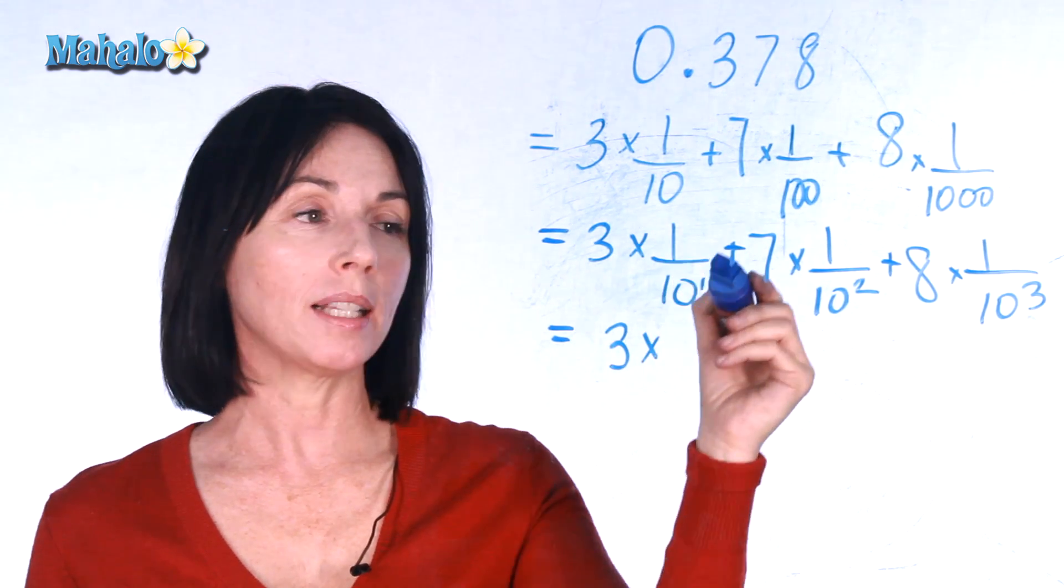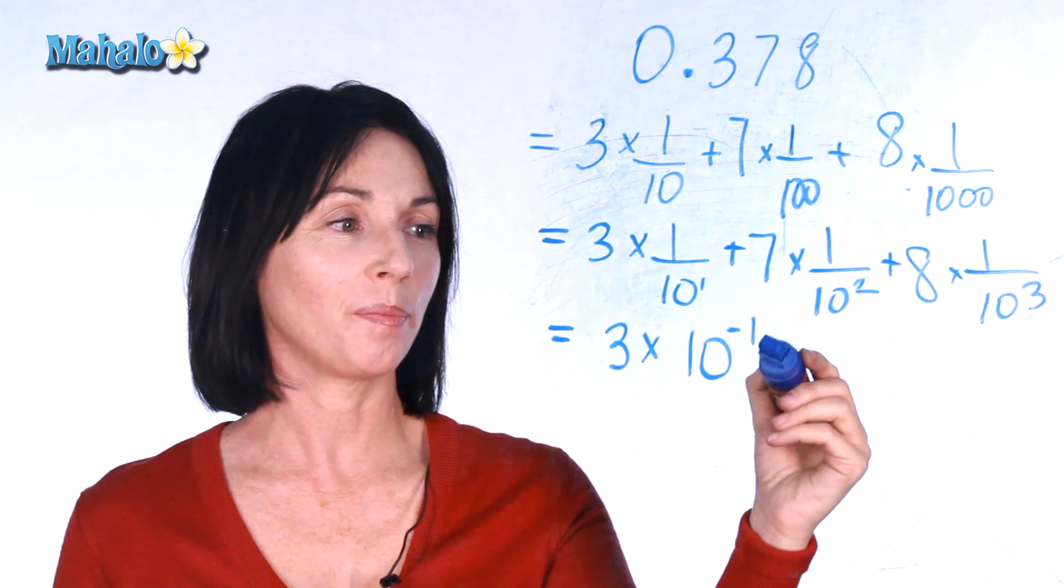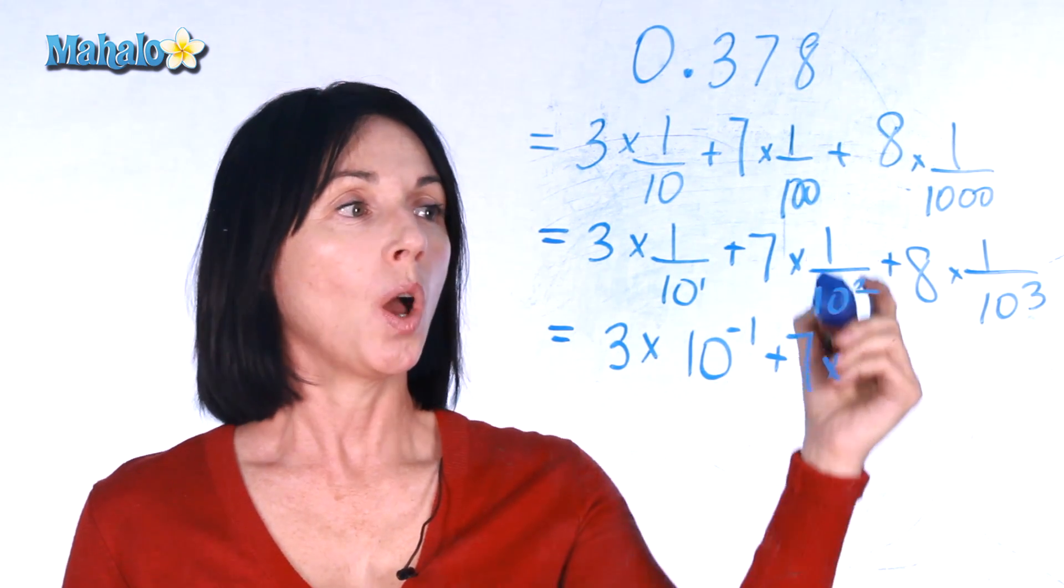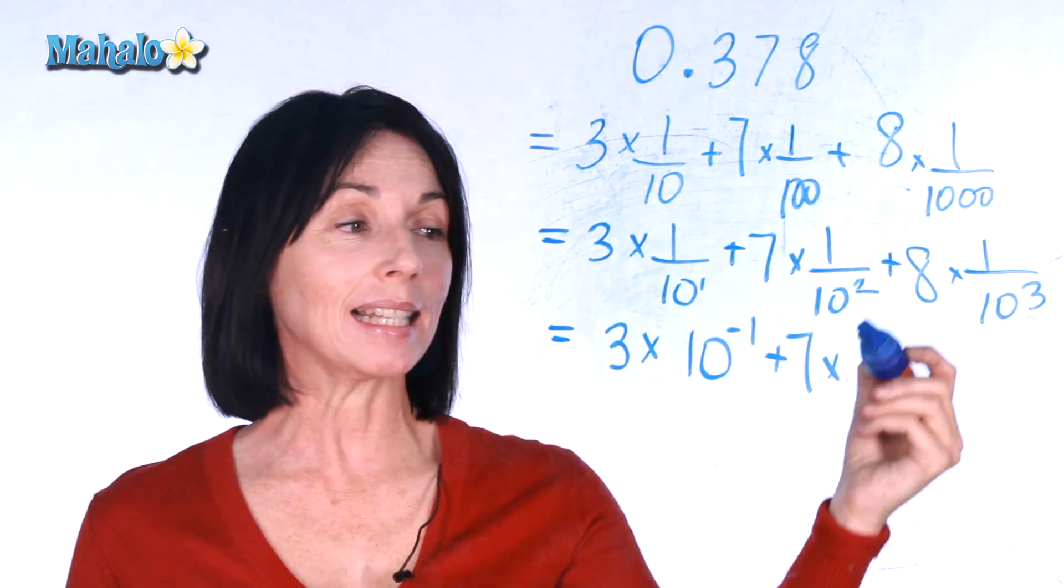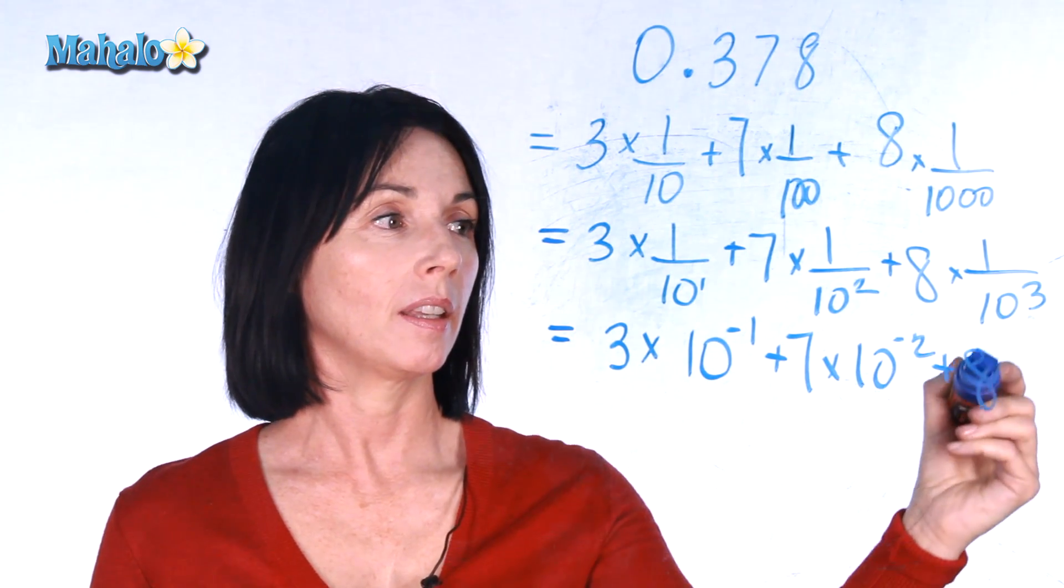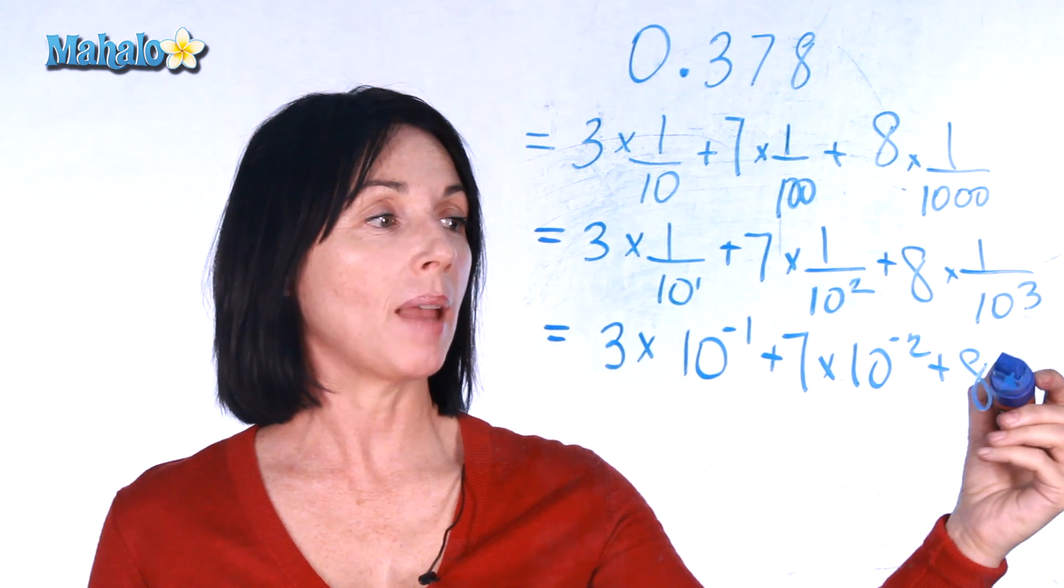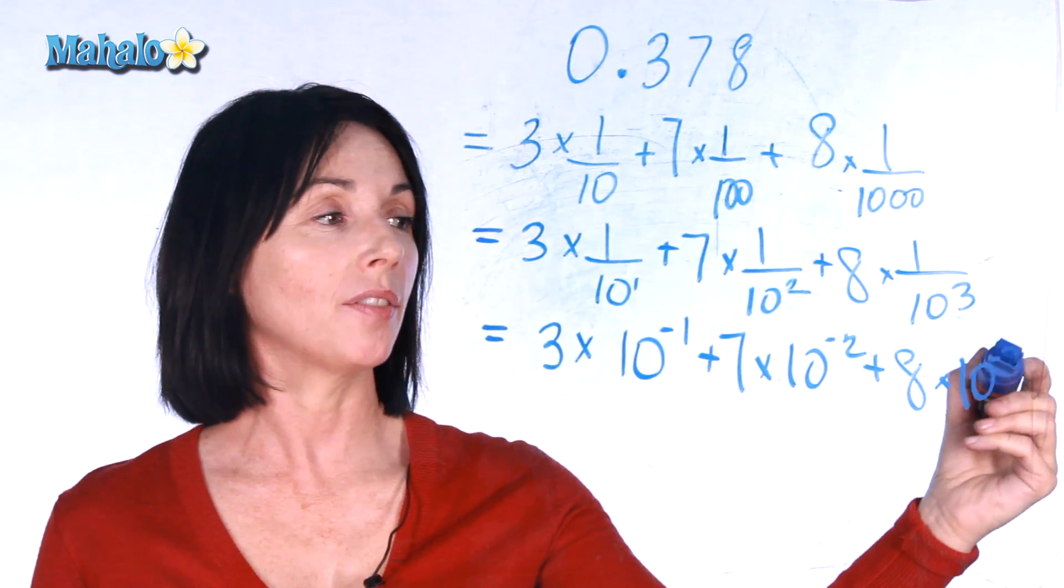1 tenth raised to the power of 1 is the same as 10 raised to the power of negative 1. 1 over 10 squared is the same as 10 to the power of negative 2. And 1 over 10 to the power of 3 is the same as 10 to the power of negative 3.